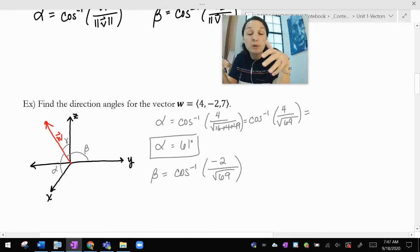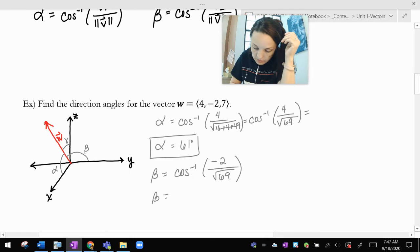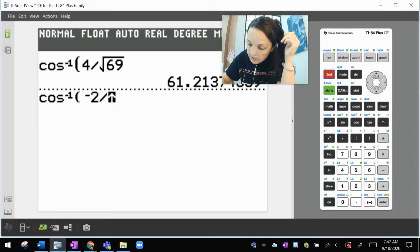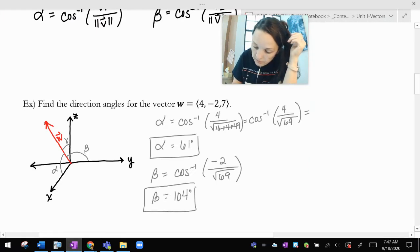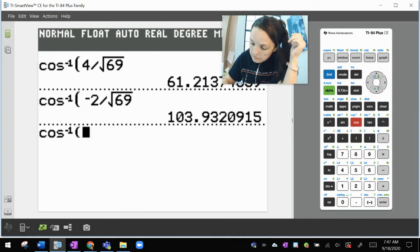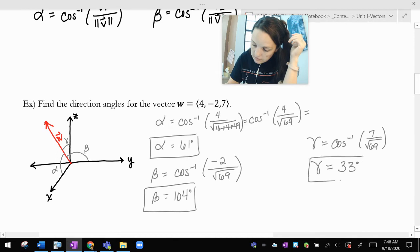Beta is the angle that the vector makes with a positive y-axis. Not with the nearest y-axis. So beta is this thing. And the reason that writing this beta formula out alerted me to that is that I've got a negative on top, which is at least an obtuse angle. I'm getting 104 degrees for beta.